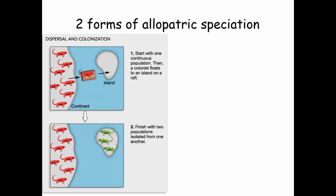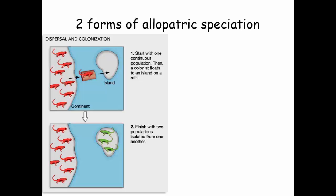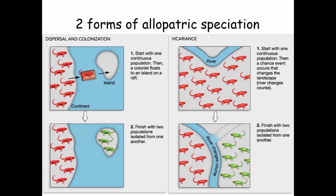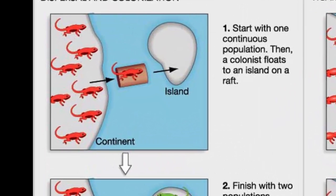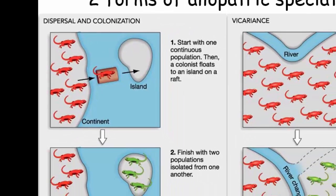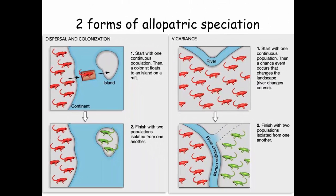With dispersal and colonization speciation, or with vicariant speciation, in both cases there's got to be some physical geographic isolation. One other component here is that when a population colonizes a new island or a new habitat, the island is colonized by a very small number of individuals. Remember when drift is really important? Small population sizes — so that's going to turn out to be important in just a little bit.